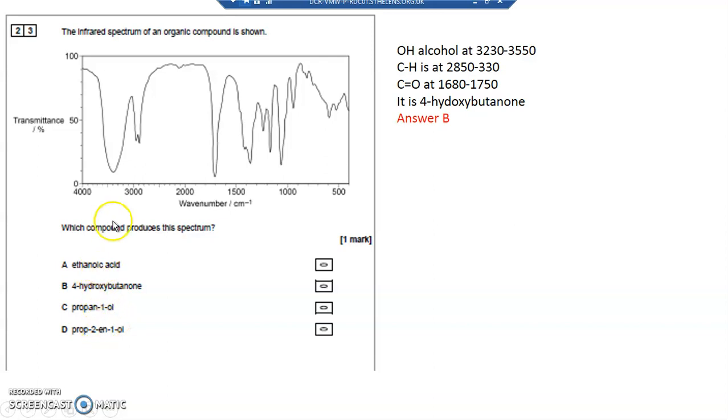So I'm down to B, C or D. As I say, ethanoic acid, the OH would be somewhere here. Instead, it would be around about 2,800, 2,900, something like that. So I've got an alcohol at 3,200 to 3,550.